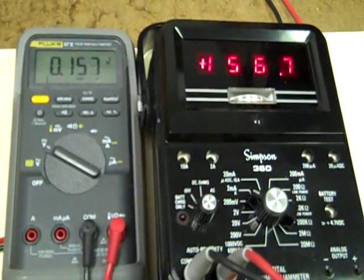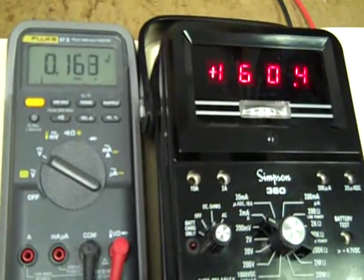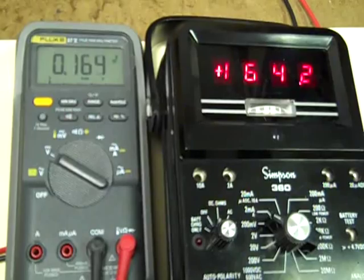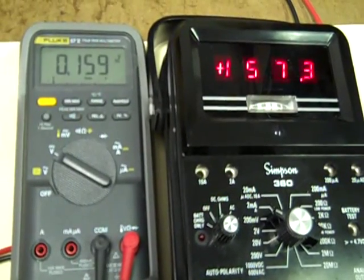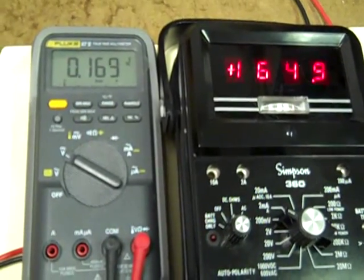We'll start with the 200 millivolt range. As you can see, they're quite close. The supply is wandering around just a little bit. Let's switch to the 2 volt range.